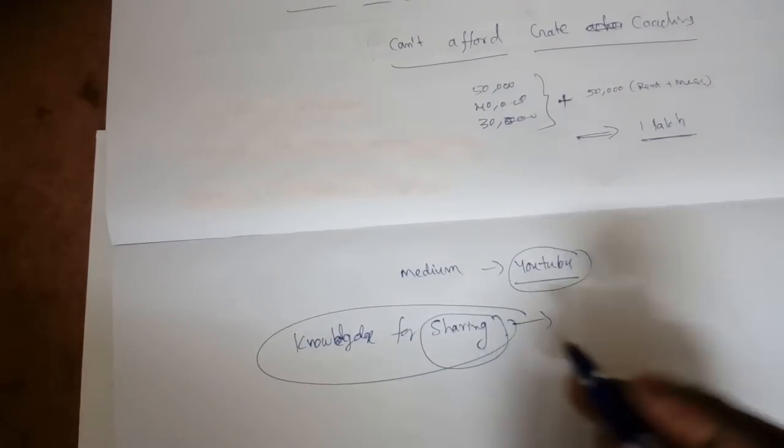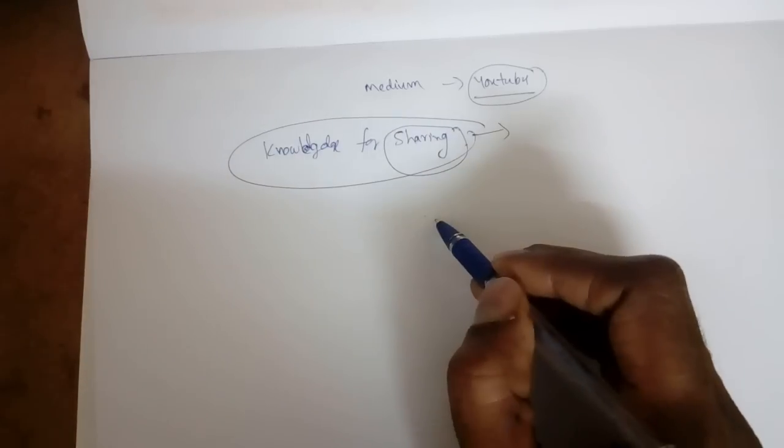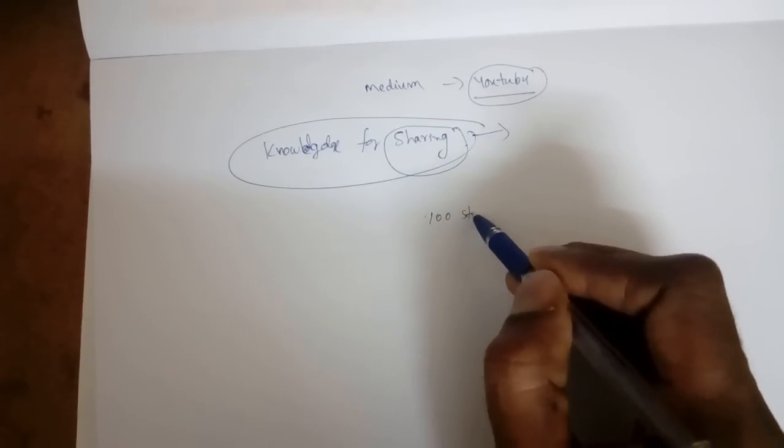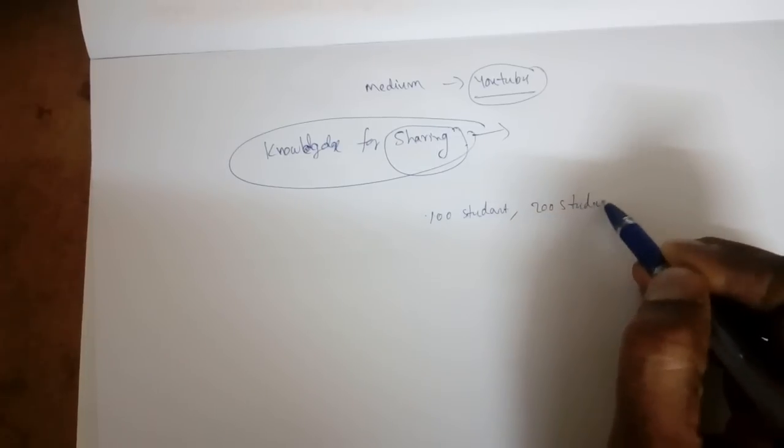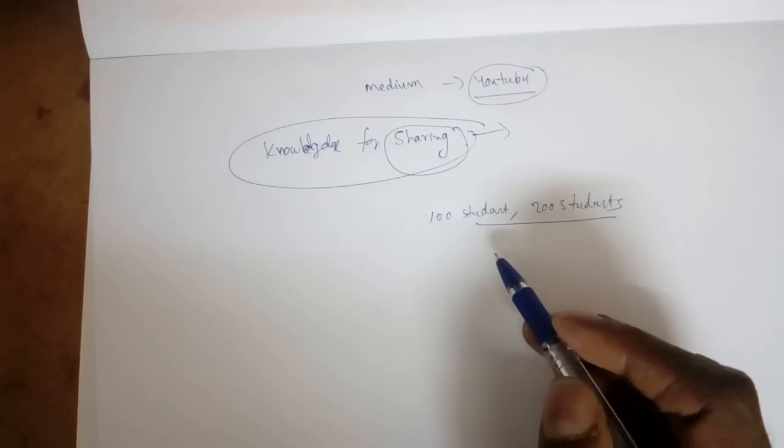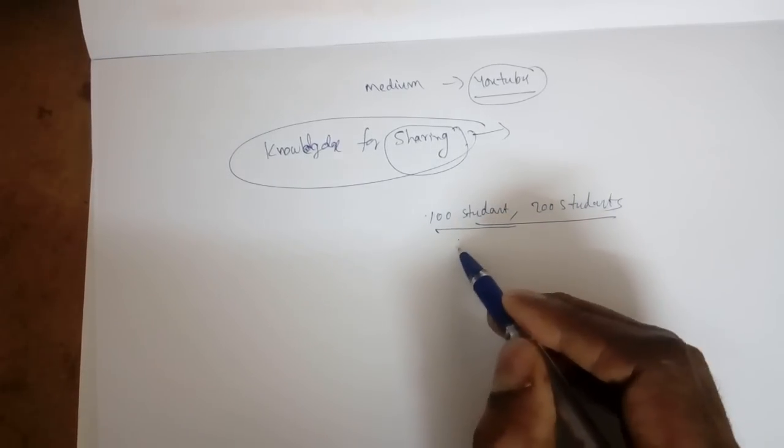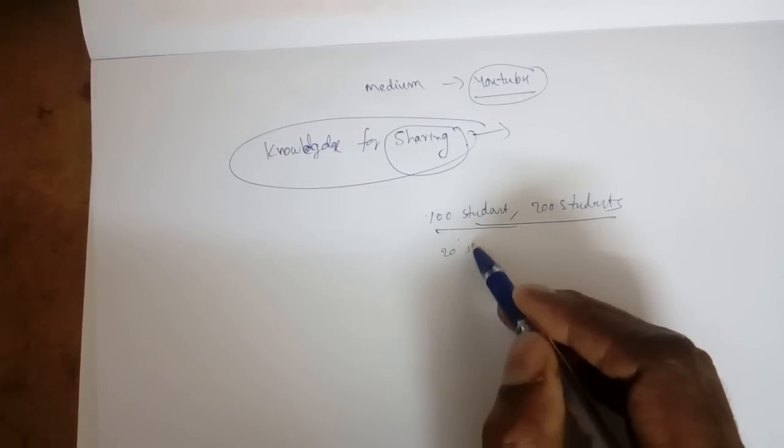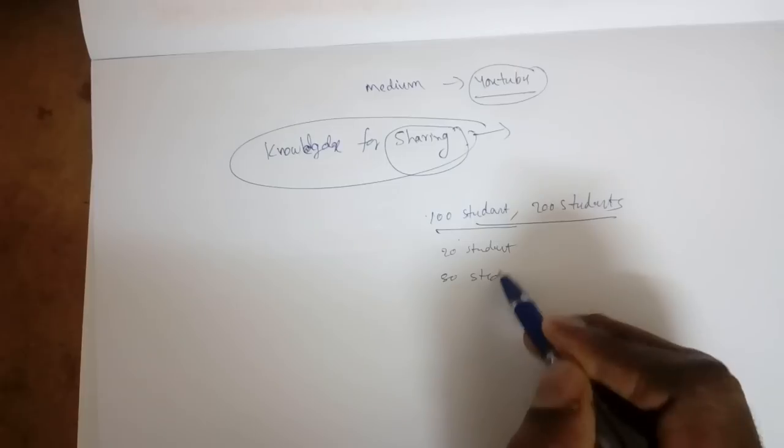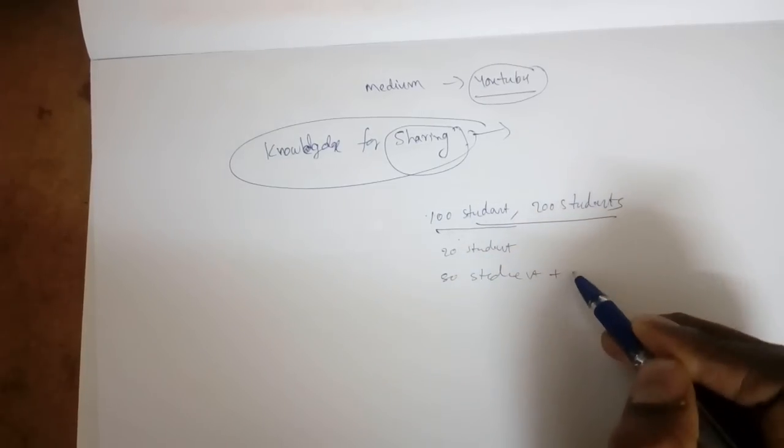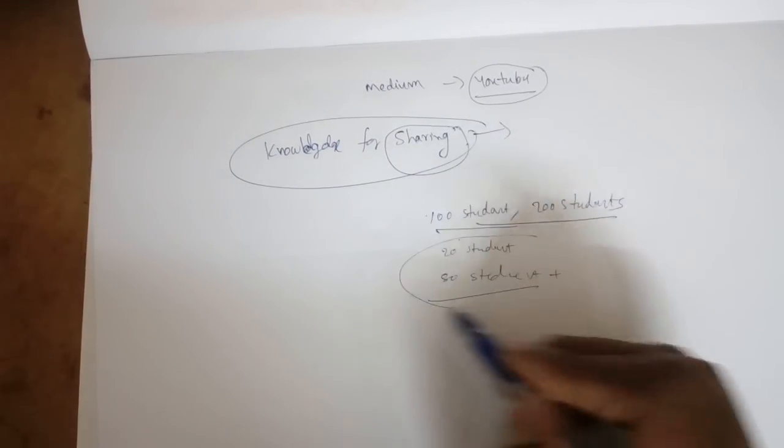One more advantage: suppose you go to an institute, there will be batch-wise, suppose 100 students, maybe 200 students. When you learn like this, sometimes in 100 students maybe 20 students will follow exactly and the remaining 80 students will only write notes or only listen, which is not very helpful. You cannot say this is proper guidance.